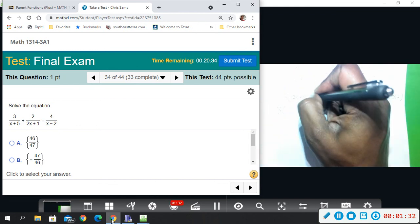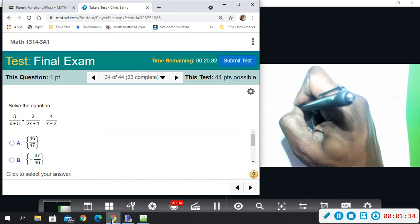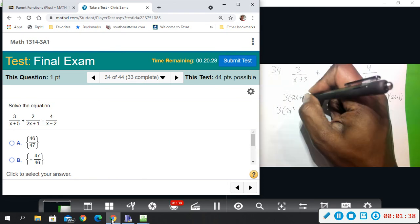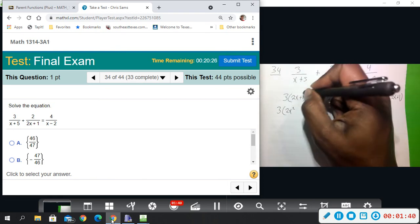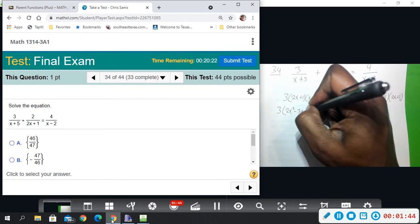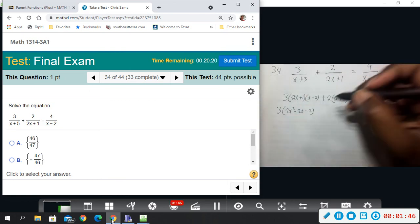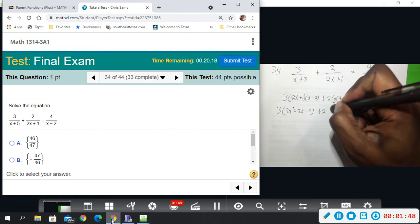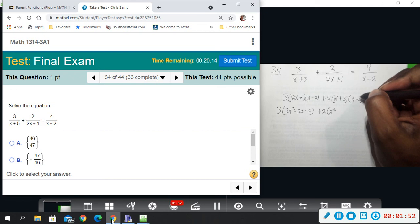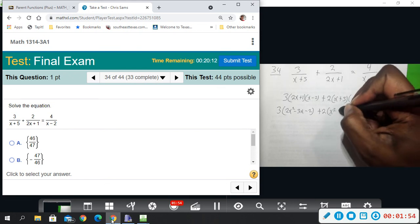That will give me 2x squared minus 4x plus x, so that's minus 3x minus 2. That's what we get there. Plus 2x times x is x squared minus 2x plus 5, so that's plus 3x.